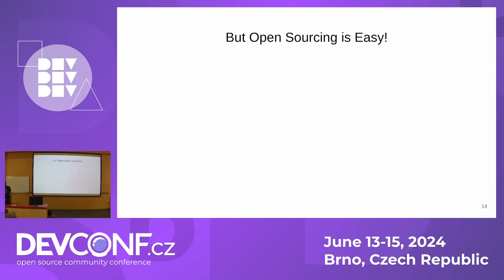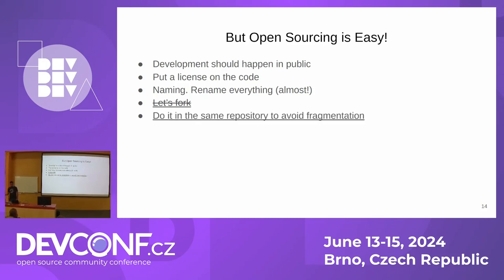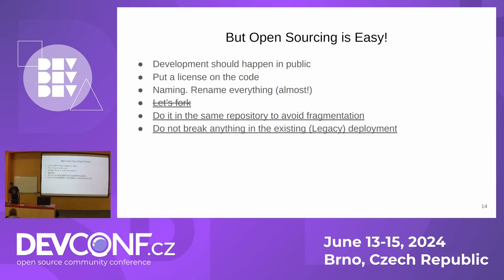Let me talk about a misconception: people think open sourcing is easy. The requirements are that development should happen in public, and you put a license on the code. But you also have to rename everything — all occurrences of CoScan had to be changed to OpenScanHub. The natural instinct is to fork: CoScan remains internal, OpenScanHub becomes public. But we decided not to take that approach. With a handful of people involved, we all agreed to do everything in the same repository and not create a long-term fork.